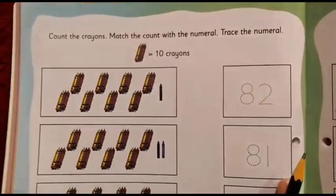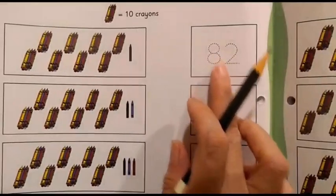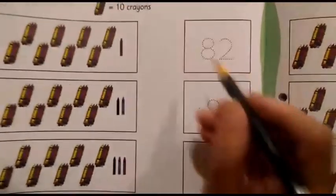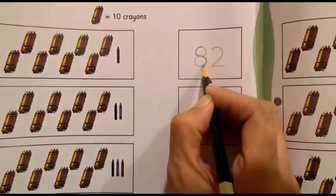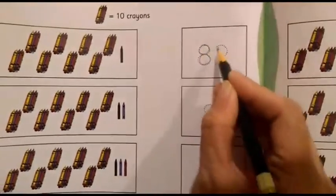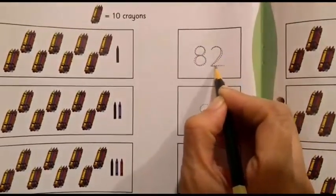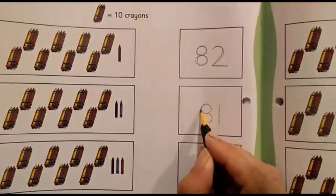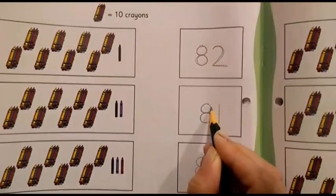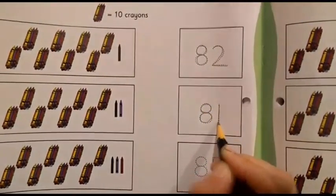So, first what we are going to do? First, we will be tracing these numerals. Let's trace it. 8 to 82. While tracing, keep on saying the numbers also. So, 8, 1, 81.